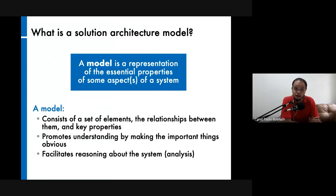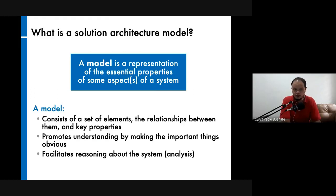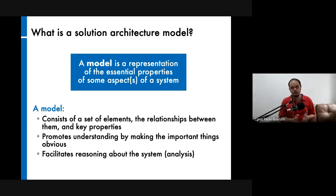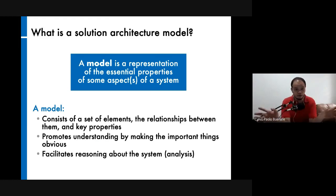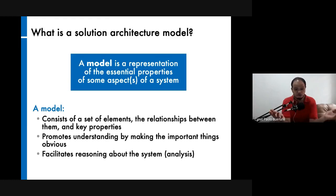What is a solution architecture model? Simply put, it is a representation of the essential properties of some aspect or aspects of a system — some sort of a symbol, a representation of certain properties or attributes. It has to be collective; you can't just have separate representations that you don't put together. Your model would also show the interplay of all these representations. A model consists of a set of elements, the relationships between them, and key properties.